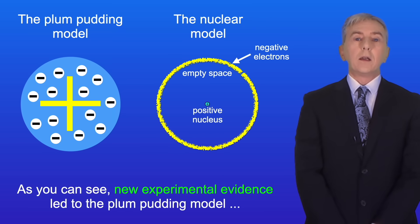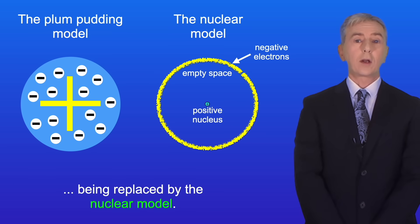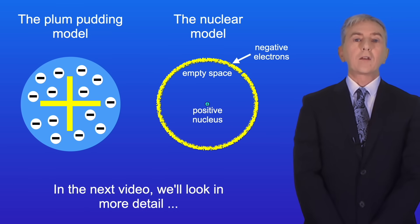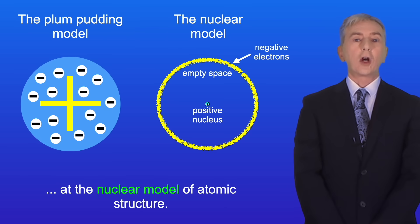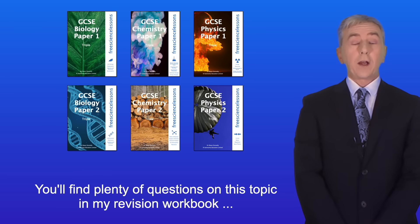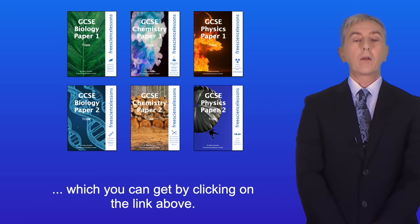So as you can see, new experimental evidence led to the plum pudding model being replaced by the nuclear model. In the next video we look in more detail at the nuclear model of atomic structure. You'll find plenty of questions on this topic in my revision workbook, which you can get by clicking on the link above.